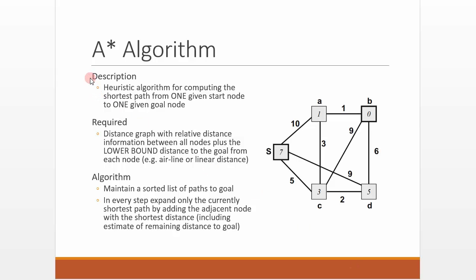In this video I'm going to give you some intuition regarding the A-star algorithm. The A-star algorithm is a heuristic algorithm for computing the shortest path from one given start node to one given goal node.